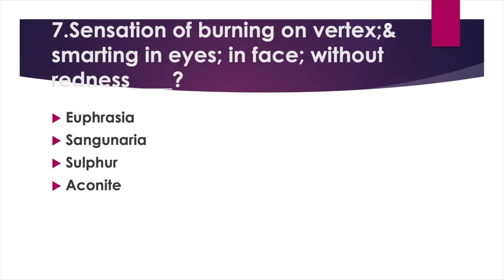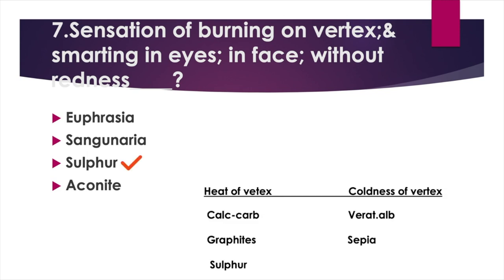Sensation of burning on vertex and smarting in eyes, in face, without redness — Option A: Euphrasia, Option B: Sanguinaria, Option C: Sulphur, Option D: Aconite. Answer: Option C, Sulphur. Heat of vertex: medicines are Calcarea carb, Graphites, and Sulphur. Coldness of vertex: Veratrum album and Sepia.